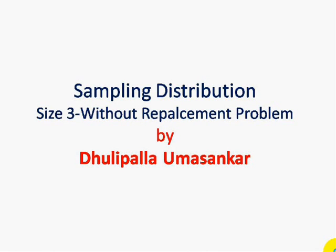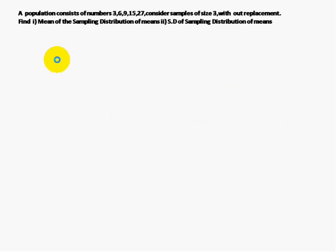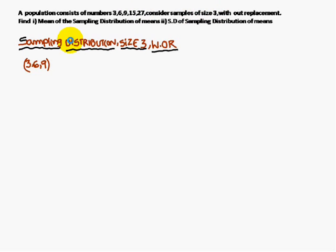Today we are going to discuss sampling distribution of size 3 without replacement. The numbers given are 3, 6, 9, 15, and 27. We have to form samples of size 3.